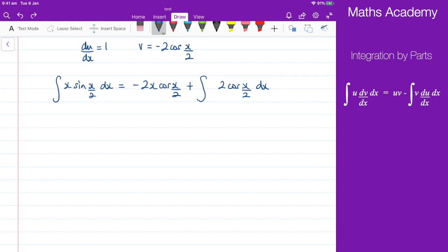So what we now have is the negative 2x cosine of x over 2 plus, and the integral of 2 cosine x over 2 would be 4 sine of x over 2, and then just need to add on the constant of integration.